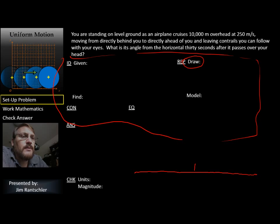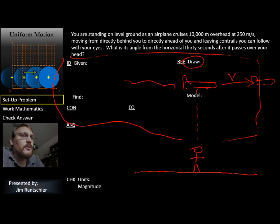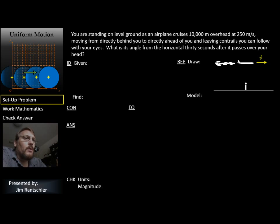The draw is the important part here. What it lets us do is get an idea of what's actually going on, because when you're looking at a bunch of words, it's hard to understand what's going on. So what we have here is you, a stick figure. There's directly above you, an airplane that's going from directly above you to some other point out here, and it's moving at some speed V.